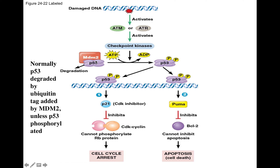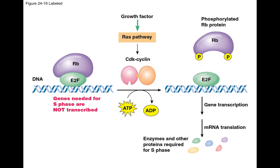In the normal healthy situation with no DNA damage, P53 is made and destroyed. When there has been DNA damage, the kinase adds phosphates onto P53, MDM2 can no longer add ubiquitin, and P53 builds up. As a DNA-binding protein, P53 activates transcription of genes such as P21, which is a cyclin-dependent kinase inhibitor. P21 inhibits a CDK-cyclin complex, which then cannot phosphorylate RB, and without RB phosphorylation you don't go into S phase.